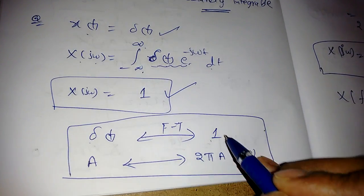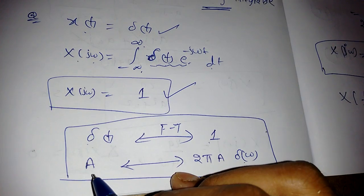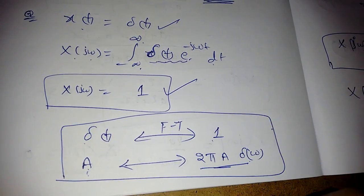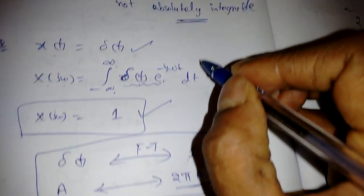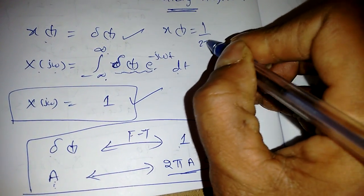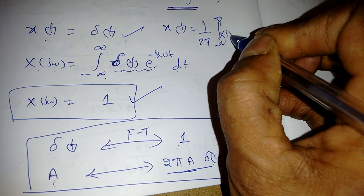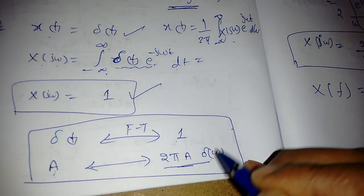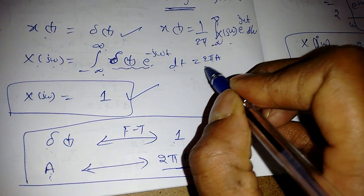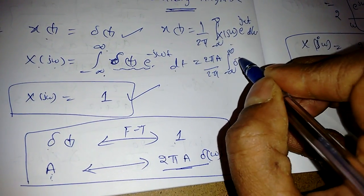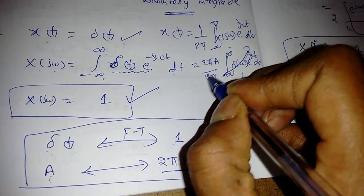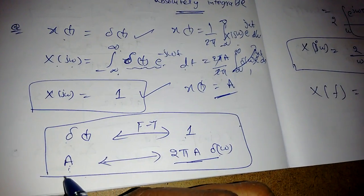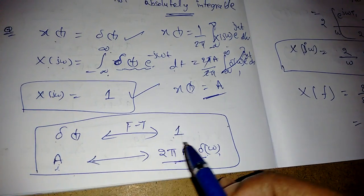Conversely, if X(jω) = δ(ω), what is x(t)? For a constant x(t) = a, the Fourier transform is 2πa·δ(ω). We can verify this: substituting X(jω) = 2πa·δ(ω) into the inverse formula, 2πa/(2π) times the integral of δ(ω)·e^(jωt) dω = a. So the 2π cancels and we recover x(t) = a, confirming the transform pair.